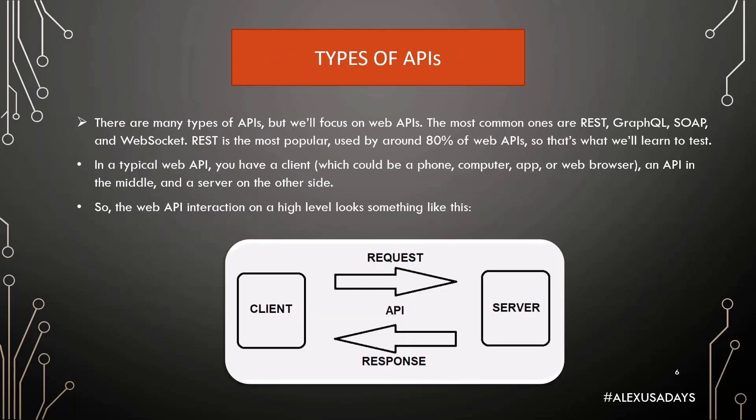Types of APIs: there are many types of APIs, but we'll focus on web APIs. The most common ones are REST, GraphQL, SOAP, and WebSocket. REST is the most popular, used by around 80% of web APIs, so that's what we'll learn to test. In a typical web API, you have a client — which could be your phone, computer, application, or even your web browser — an API in the middle, and the server on the other side.